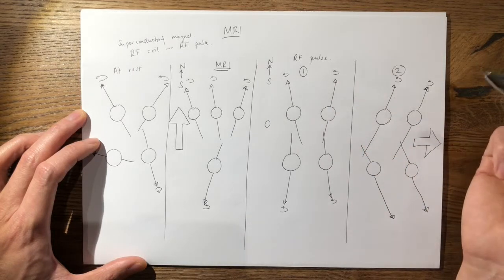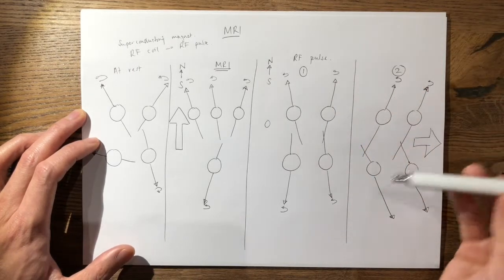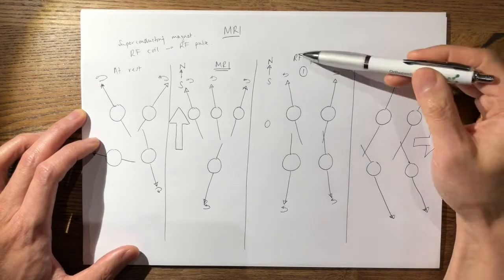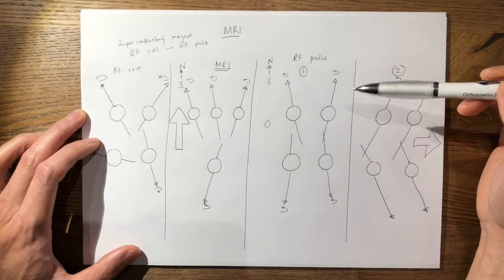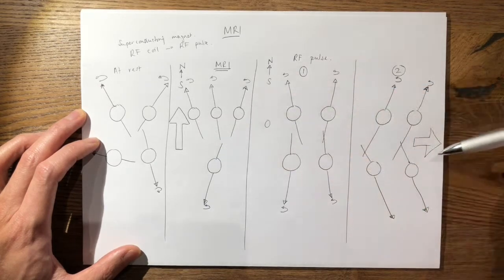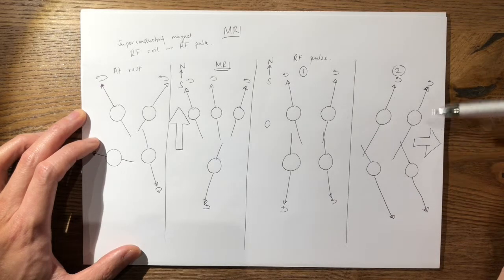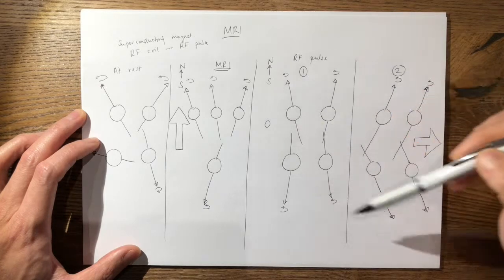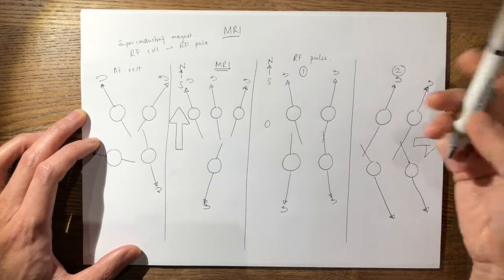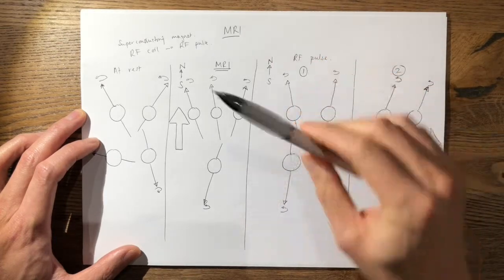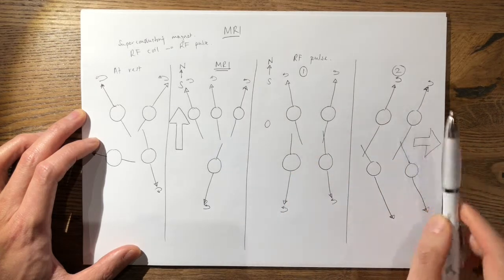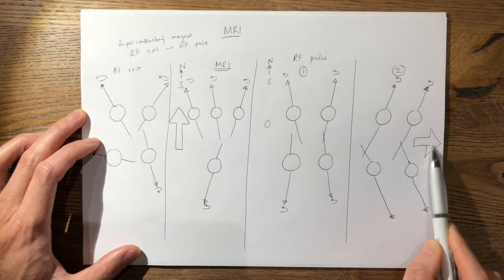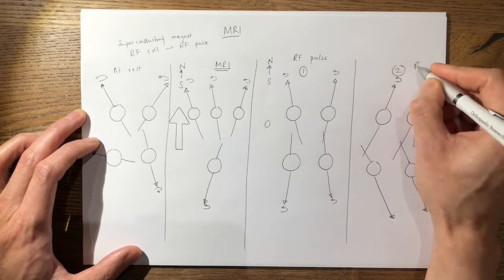In some books you may read that once a radiofrequency pulse is applied, the two things that happen are that the longitudinal magnetization vector changes to a horizontal magnetization vector, and the second is precession. That is true overall, but the detailed process is: first they flip, obliterating the longitudinal magnetization vector, and as a result of precession you get the transverse magnetization vector.